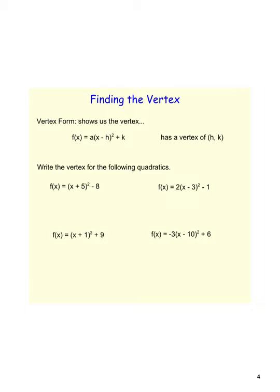Finding the vertex: vertex form is designed to make it very easy to find that vertex. This is what we expanded into standard form on the last slide. But now we're just asking for the vertex. Keep in mind the minus is built into the equation, so that seems a little backward. For instance, in this first equation, the h value is actually negative 5, because this would be x minus negative 5, and that minus a negative is what made it a plus. The k is just straightforward — the y value of the vertex.